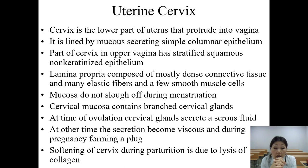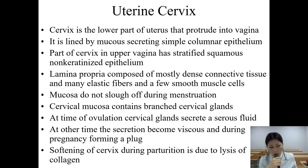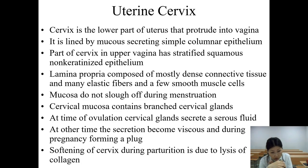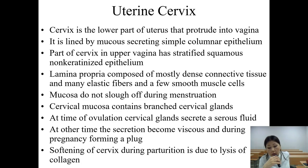At the time of ovulation, cervical glands secrete a serous fluid. At other times the secretion becomes viscous, and during pregnancy it forms a plug. Softening of the cervix during parturition is due to lysis of collagen.